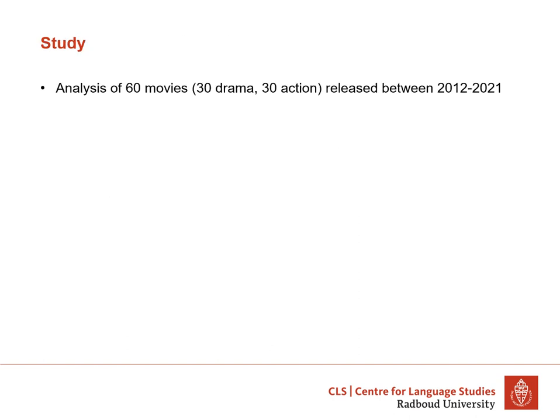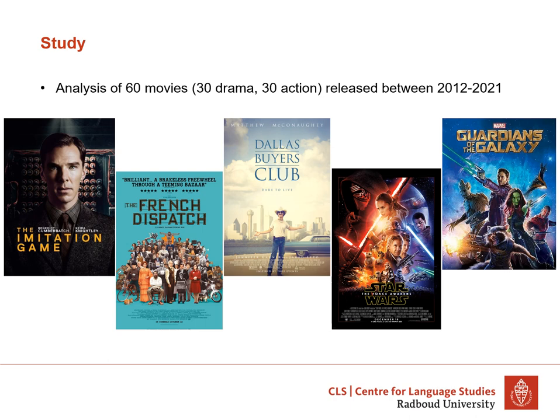We used the IMDB database to assemble a set of 60 popular movies released between 2012 and 2021. We chose drama and action movies because these are both among the most successful movie genres, and because death events occur in both genres, but there are also differences between them. Drama movies are typically eudaimonic — a form of meaningful and moving entertainment — but action movies are typically not. This means that comparing the two genres could reveal if there are genre differences in how death is portrayed, and if drama movies ascribe more or different meanings to death than action movies.